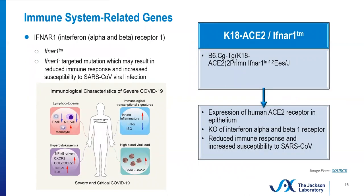Let's talk for a minute about the interferon alpha receptor. Interferons were so named because they interfere with viral replication and were later shown to be involved in other immune responses, including anti-tumor activity. They're small molecules involved in intercellular immune system signaling. The type 1 interferons are typically produced early in the immune response as a result of pathogen-associated molecular patterns. They activate and indirectly recruit NK cells, which can directly kill infected cells and also make interferon gamma. The immunological characteristics of severe COVID-19 patients include impaired type 1 interferon responses accompanied by lymphocytopenia, hypercytokinemia, and high blood viral load. So this double mutant — K18-ACE2 human transgene expressing and a knockout for interferon alpha receptor on the Black/6 background — could be a very interesting strain to take a look at in the context of COVID-19 infection models.